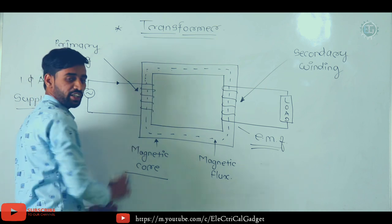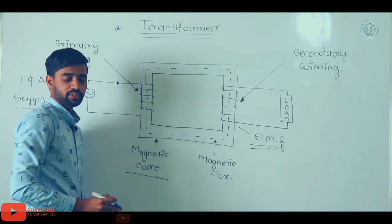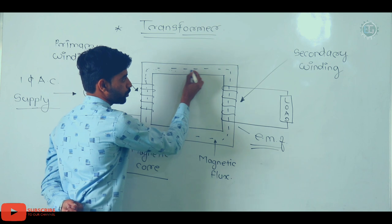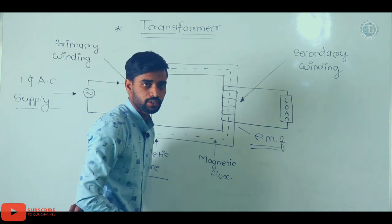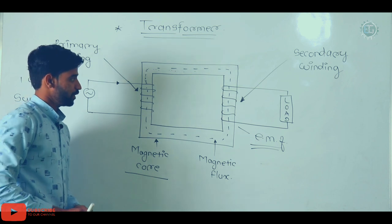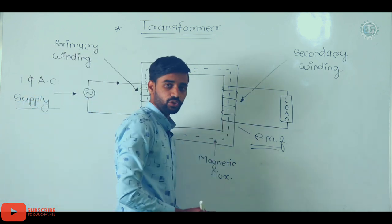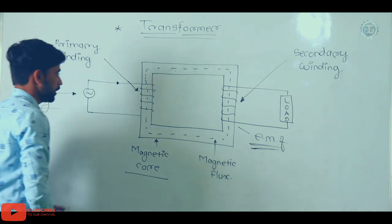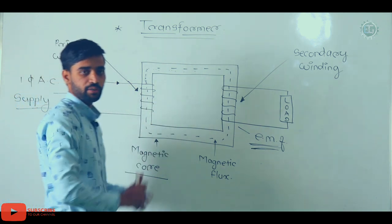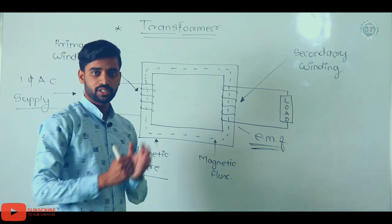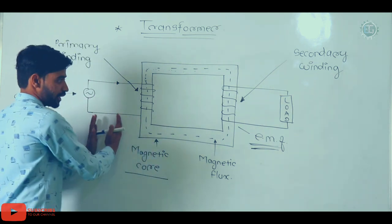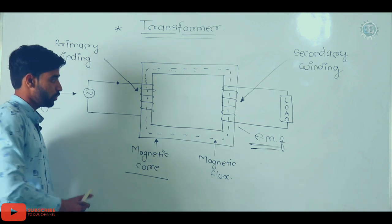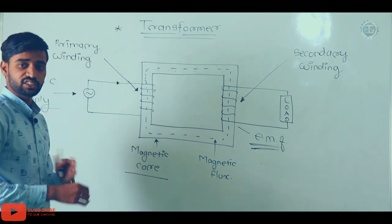In the magnetic core, flux is generated in the primary winding as current flows, and the flux flows through the magnetic core and links with the secondary winding. According to Faraday's law of electromagnetic induction, an EMF and voltage are generated in the secondary winding and current starts to flow. This is how the transformer transfers electrical energy from one circuit to another circuit without changing its frequency.